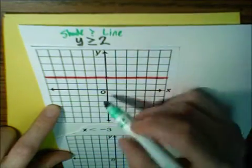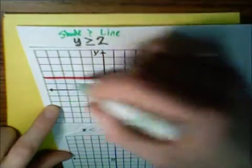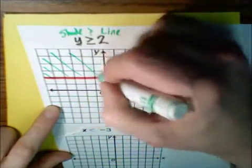In other words, where the y-axis is, I'm going to shade greater than. Here's my line. I'm going to shade above the line.